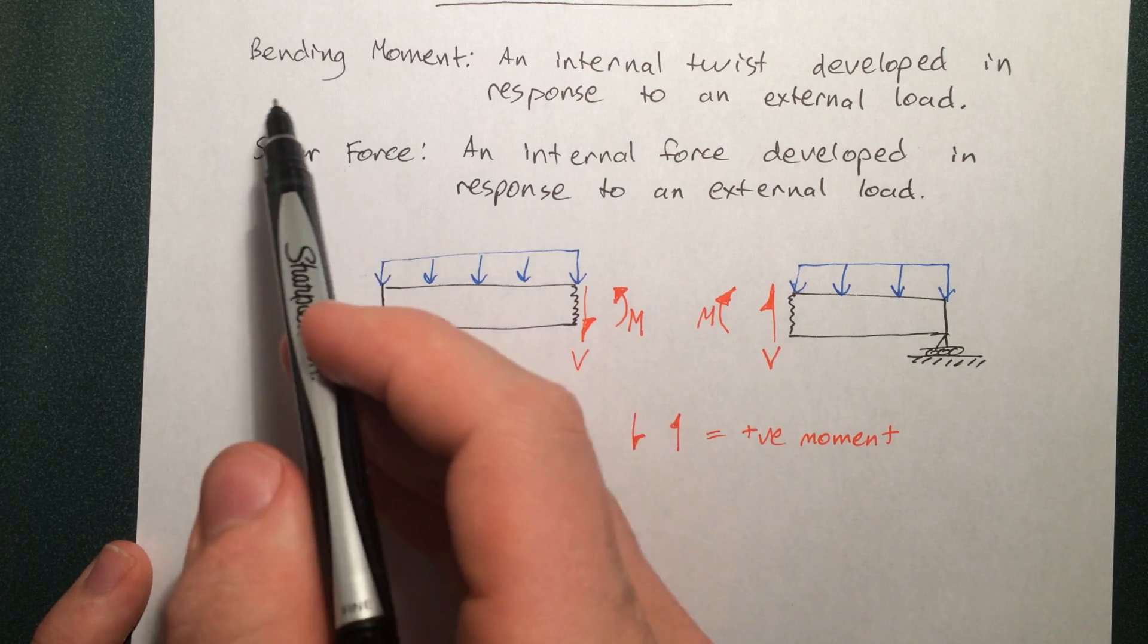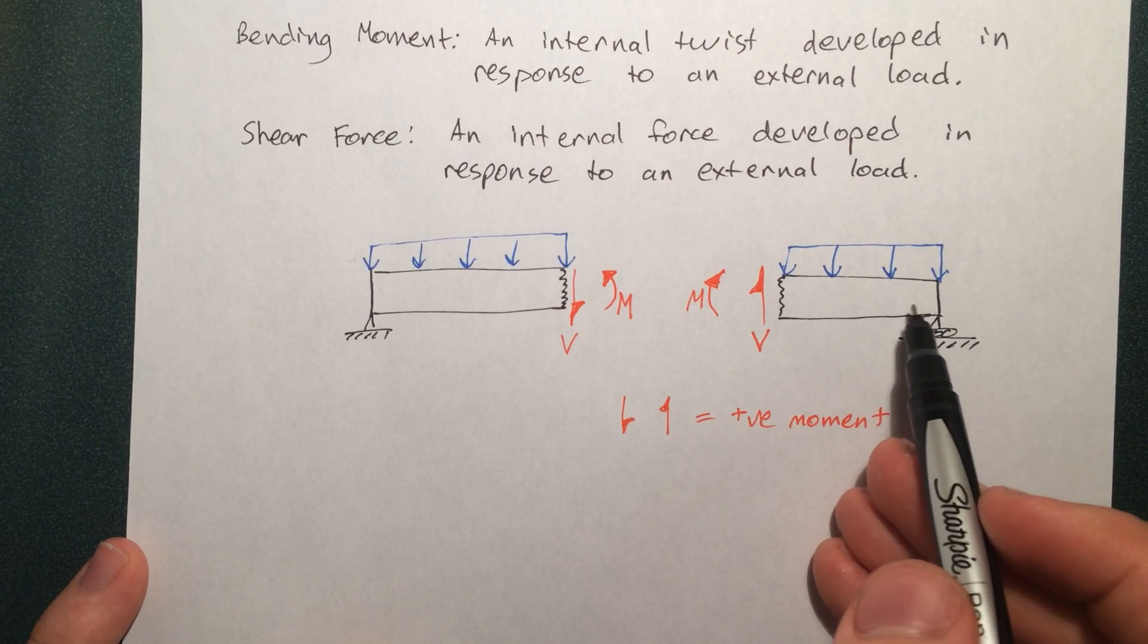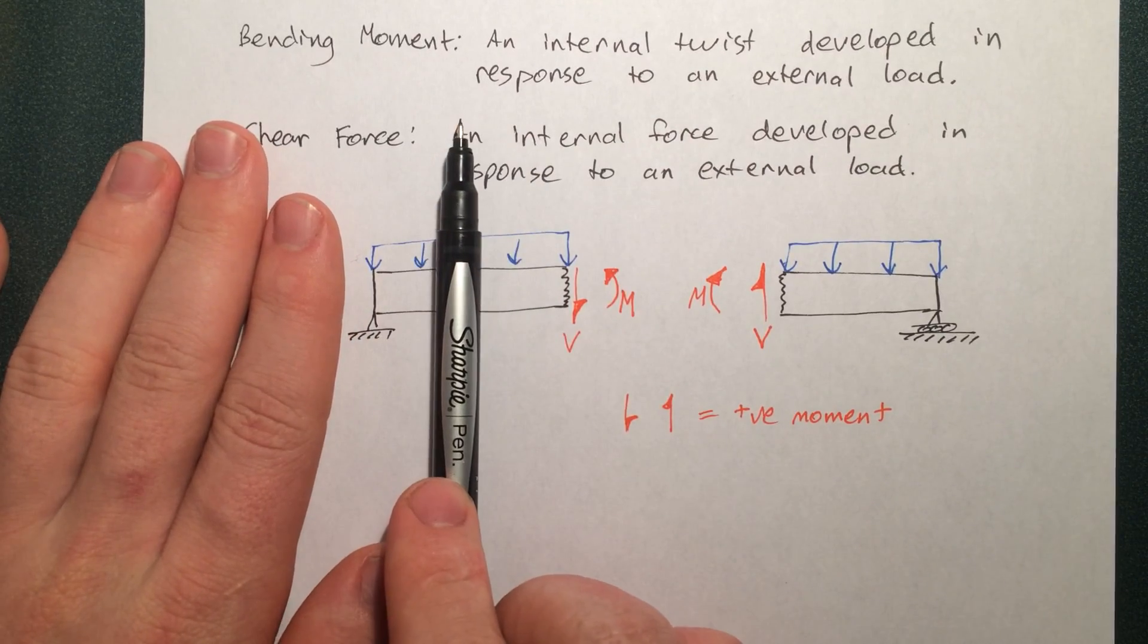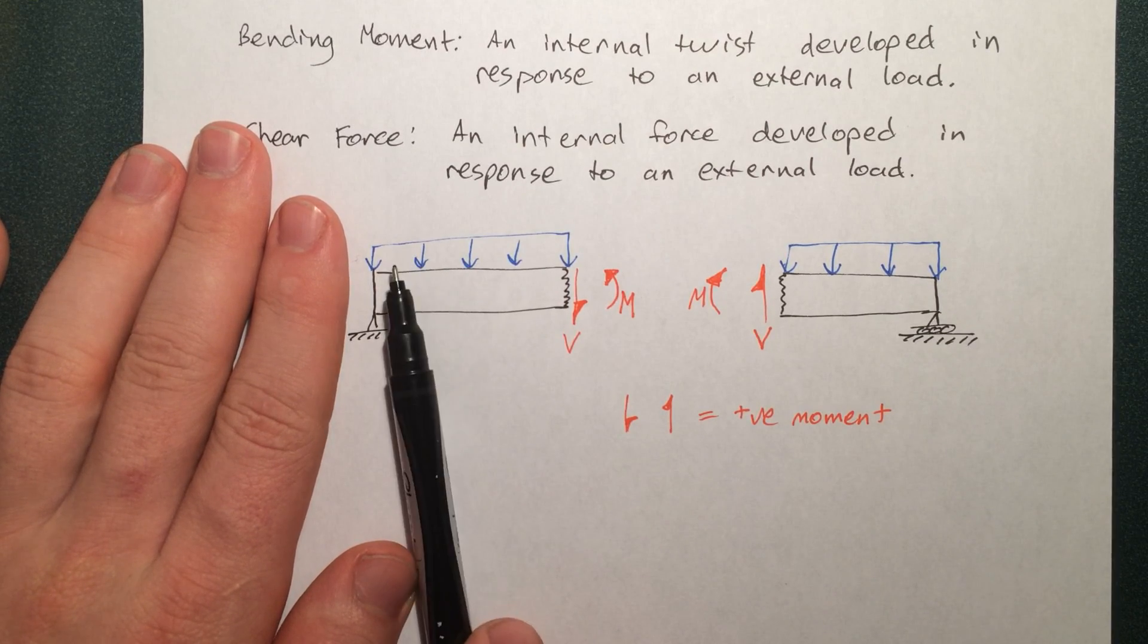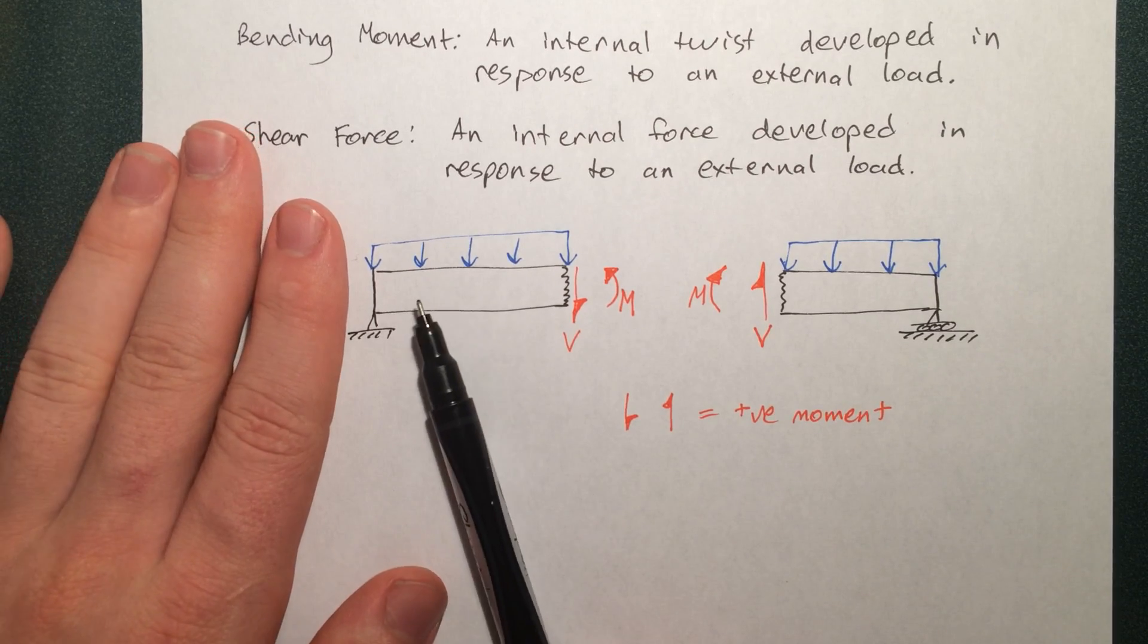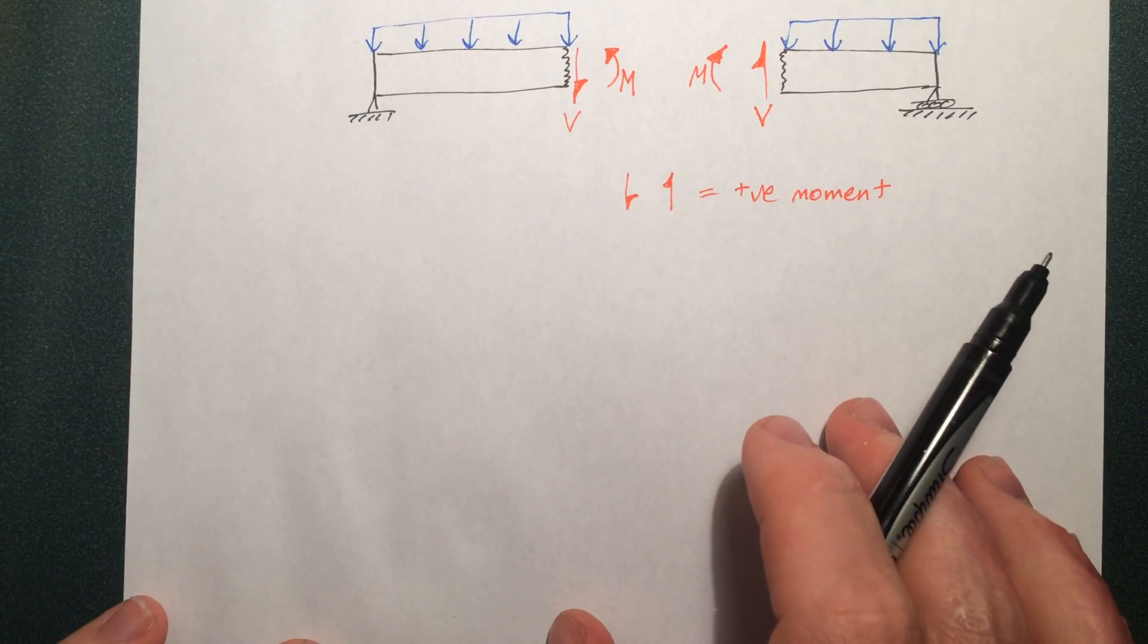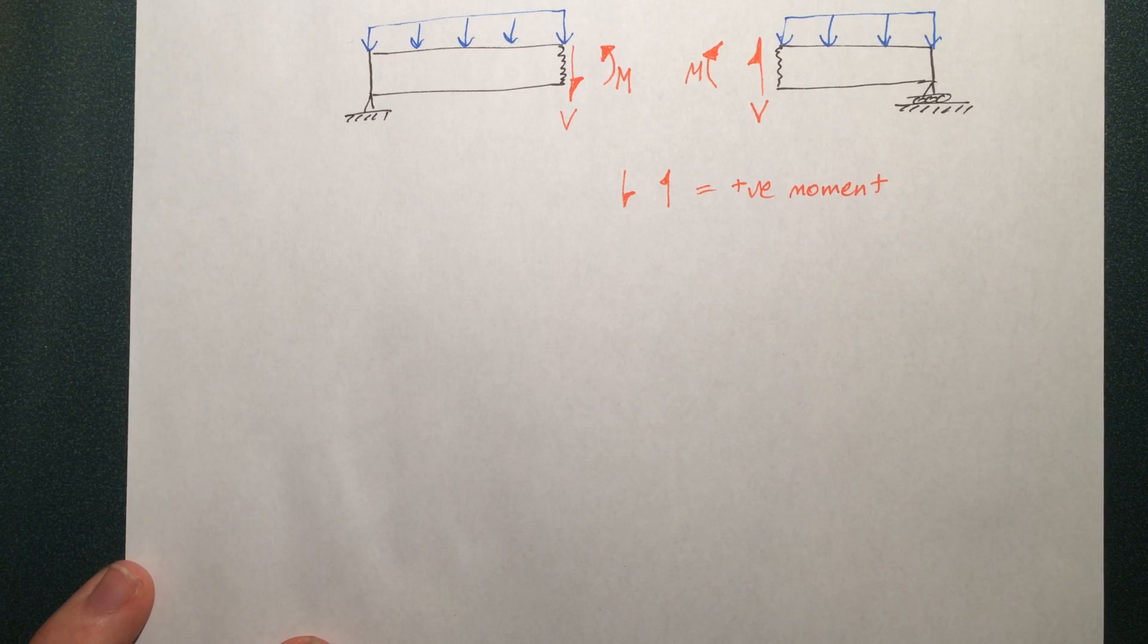So moving into what a bending moment diagram and a shear force diagram are. Just looking at this beam here, you can imagine that the shear force and the bending moment is not going to be the same at any point. If we would make that cut here on the beam, you would need a lot less bending moment to resist this piece here that's pushing down. Because there's not as much twisting it in this direction, so you wouldn't need as much to push it back. And we can go through the same logic with the shear force. The shear force is going to vary. So let's take a look at a simple example. And I'll show you how to find the bending moment and the shear force in that beam at different points on that beam. And then I'll draw the bending moment and shear force diagrams.